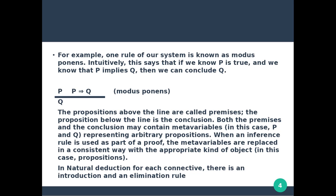One rule of our system is known as modus ponens. We have already studied this in inference rules. This says that if we know P is true, and we know that P implies Q, then we can conclude Q. So from P implies Q and P, we derive and conclude Q is true.